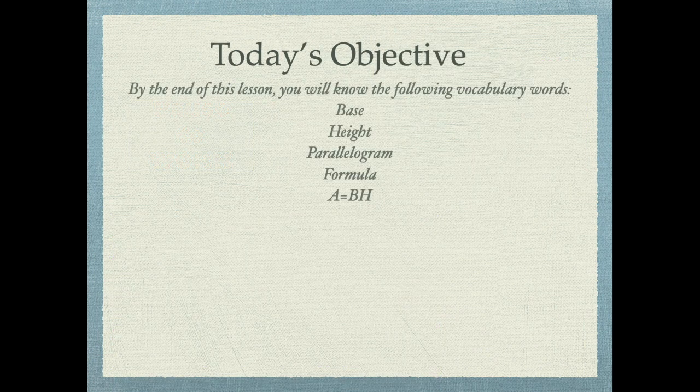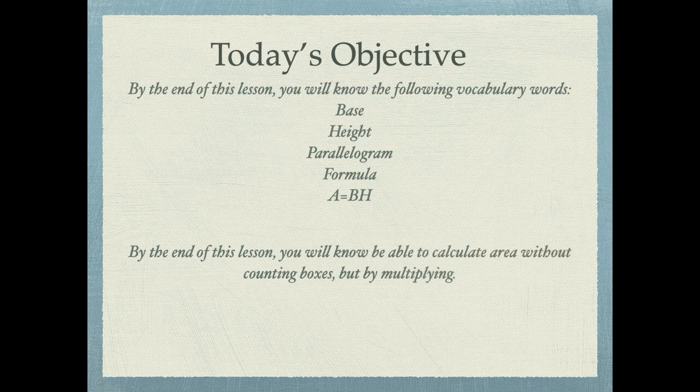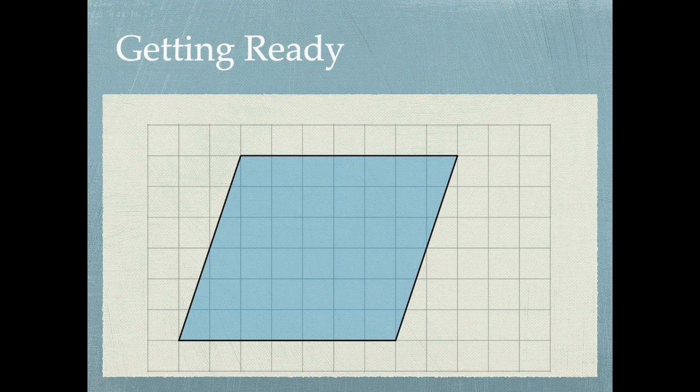Now that we got some observations out of the way, let me tell you our objectives for today. By the end of this lesson, you are going to know what a base is, a height is, a parallelogram, and you're going to start being able to explore the formula ABH. The area is equal to the base times the height in a parallelogram. By the end of this lesson, you will be able to calculate area without counting the boxes, but by multiplying.